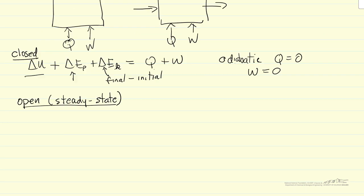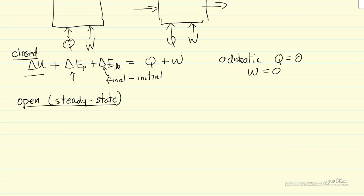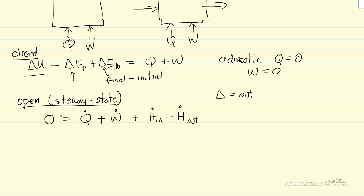Now let's talk about the open system. We're looking at an open system at steady state, which means the left side of the equation is zero — there's no change in energy of the system with time. We're adding heat per time, adding work per time, and we also have energy flowing in. That's enthalpy, again per time, because the temperature coming in can be different from the temperature leaving. So we have enthalpy out, and using delta to mean the value out minus the value in, this is minus delta H-dot.